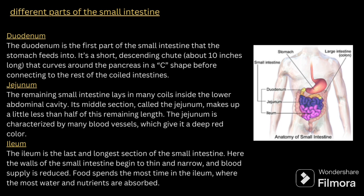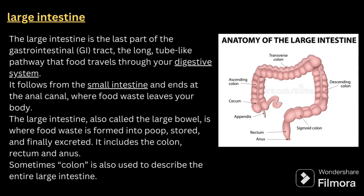The different parts of the small intestine are the duodenum, jejunum, and ileum. The duodenum is the first part of the small intestine; it is 10 inches long and C-shaped. The jejunum makes up less than half of the remaining length and is characterized by many blood vessels, with coils inside the lower abdominal cavity. The ileum is the last and longest section; here the wall of the small intestine begins to thin, blood supply is reduced, and most of the water and nutrients are absorbed.